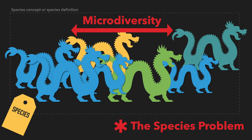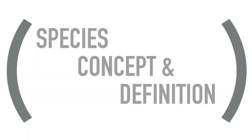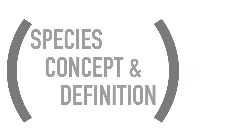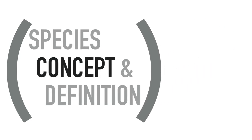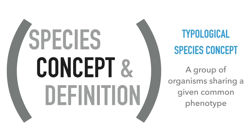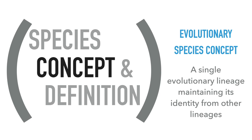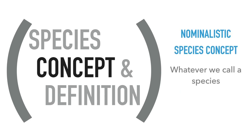Let's make a parenthesis here to talk about species concepts and definitions. A species concept is a theoretical idea of a species — the philosophical or biological principle to circumscribe species. There are many species concepts, such as the typological concept, grouping together organisms that share a given common phenotype; the evolutionary concept, a single evolutionary lineage maintaining its identity from other lineages; and even the nominalistic concept, which essentially denies the existence of species as natural entities.